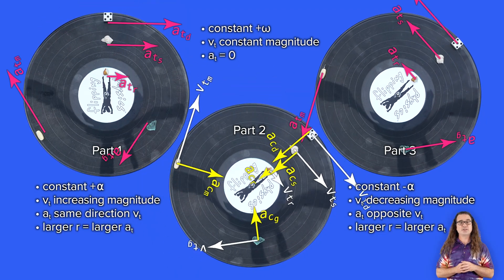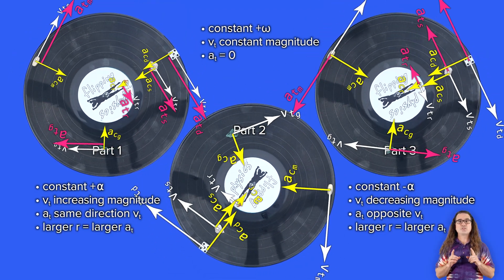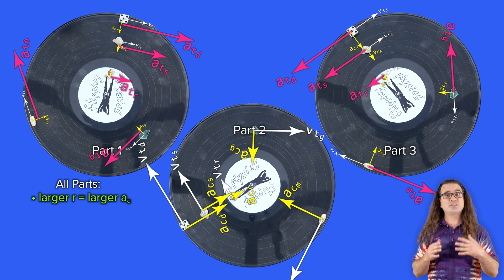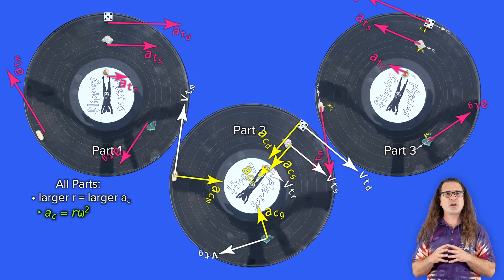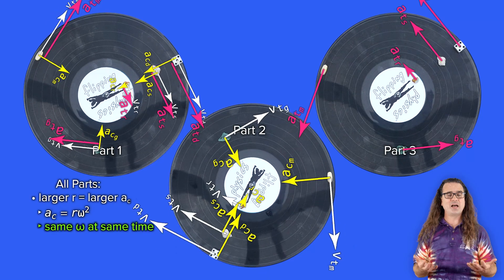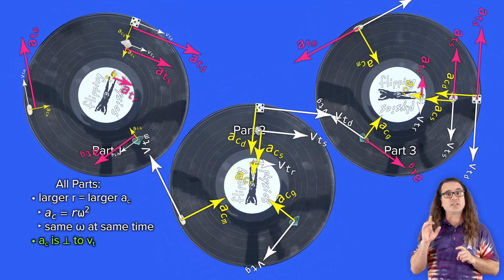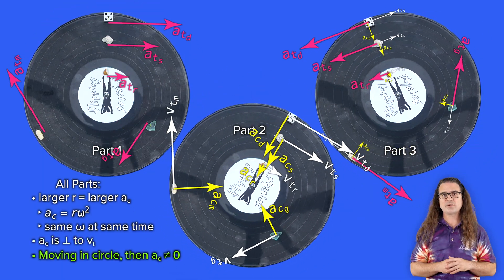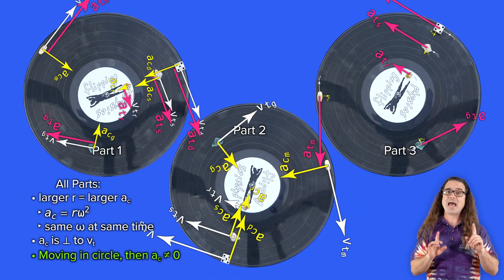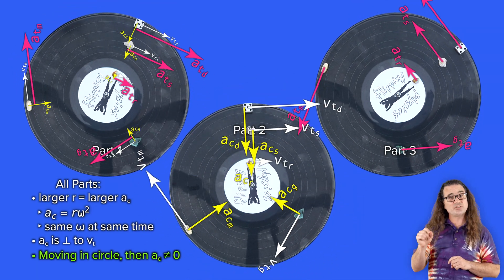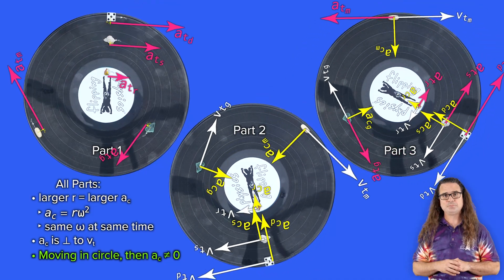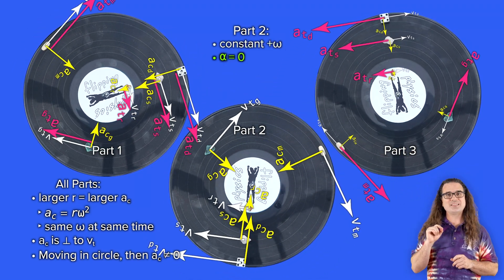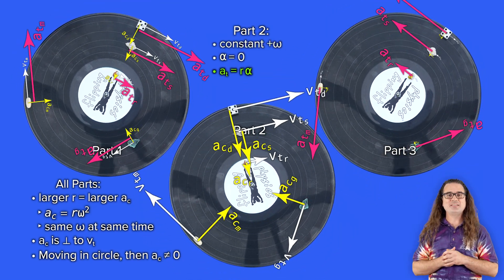Now let's add the centripetal accelerations in yellow. Again, the larger the radius of the path of the object, the larger the centripetal acceleration of each object. We know this is true because centripetal acceleration equals radius times angular velocity squared, and each of these objects has the same angular velocity. Notice that each object's centripetal acceleration is always perpendicular to its tangential velocity, and that each object has a centripetal acceleration the entire time it is moving in a circle. However, each object has a tangential acceleration only during parts 1 and 3. During part 2, when the angular velocity of the objects is constant, the angular acceleration is zero and each object does not have a tangential acceleration.